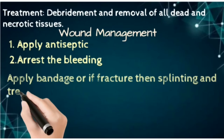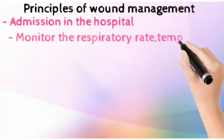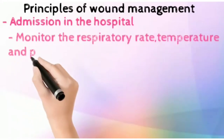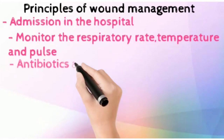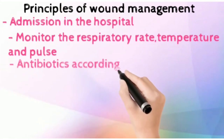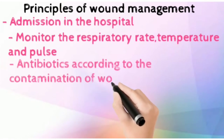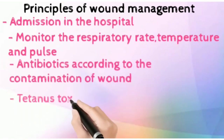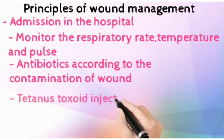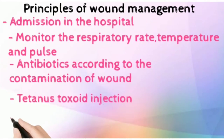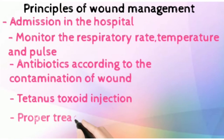If the patient needs to be admitted to the hospital, do that. Monitor the patient's respiratory rate, pulse, and temperature. Give proper antibiotics. Tetanus toxoid injection must be given to the patient — this is very necessary especially in road accidents to prevent tetanus. According to the type of wound, give the proper treatment.